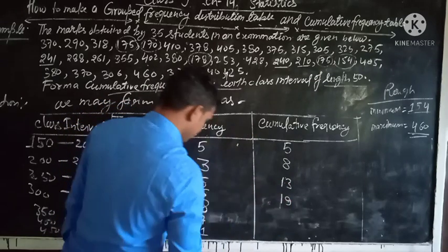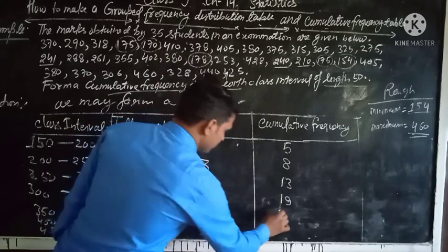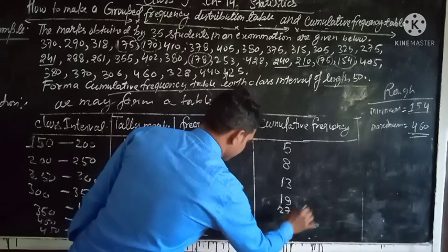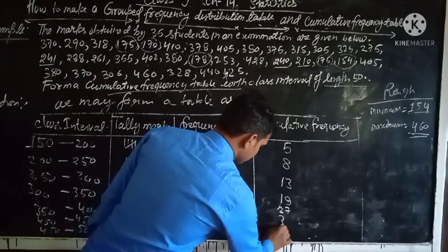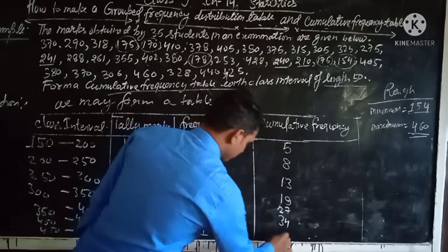19, 19 plus 8 is 27, 27 plus 7 is 34, 34 plus 1 is 35.